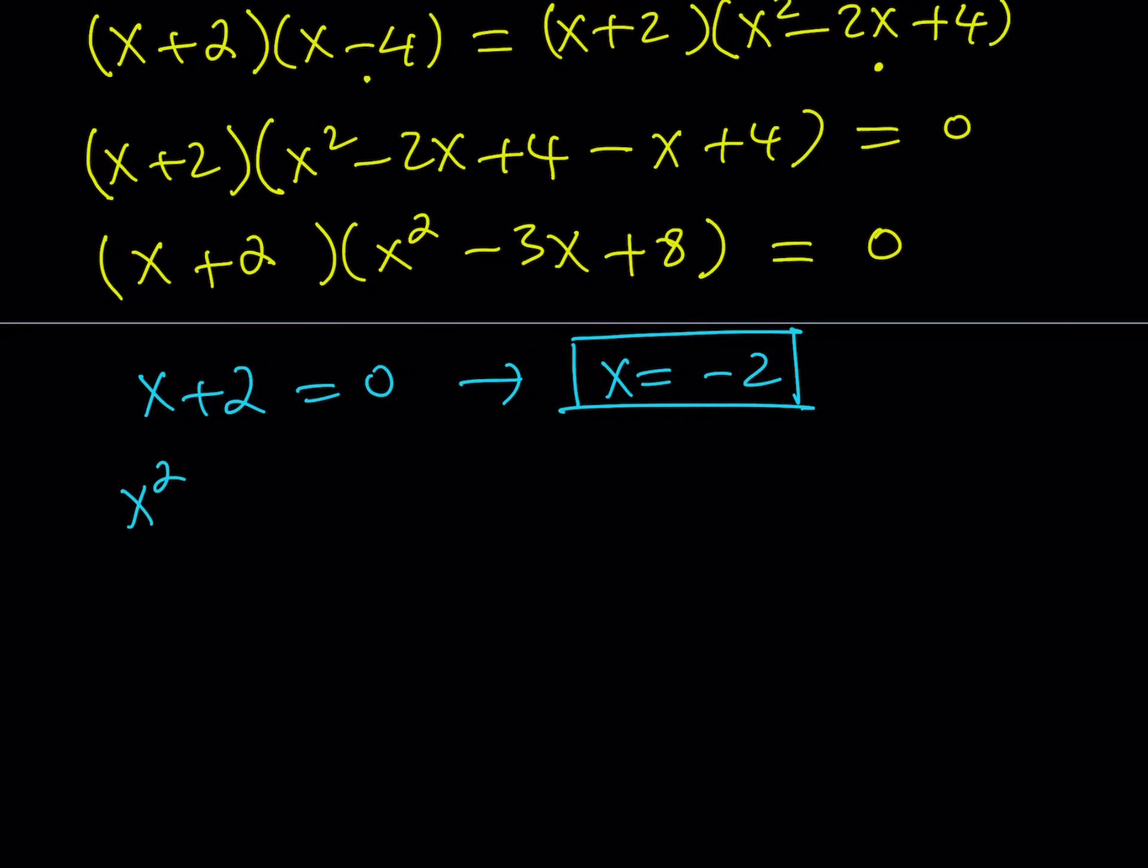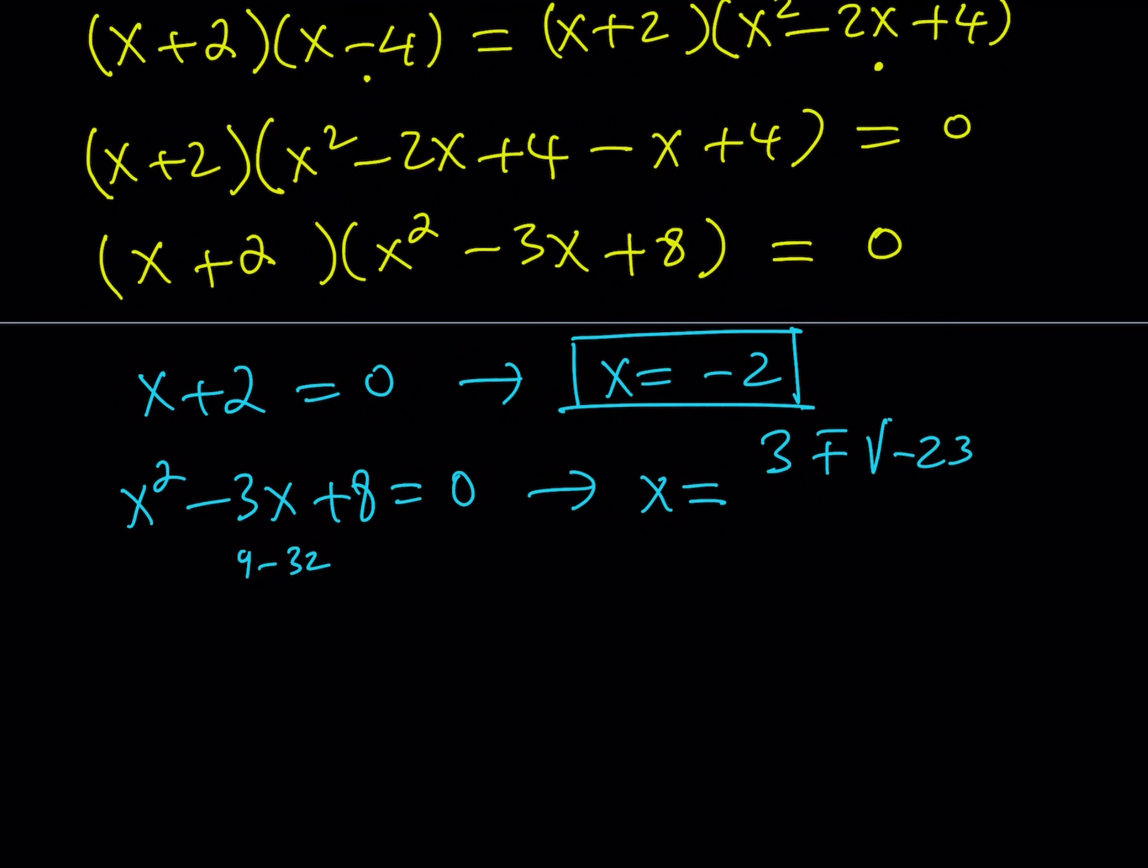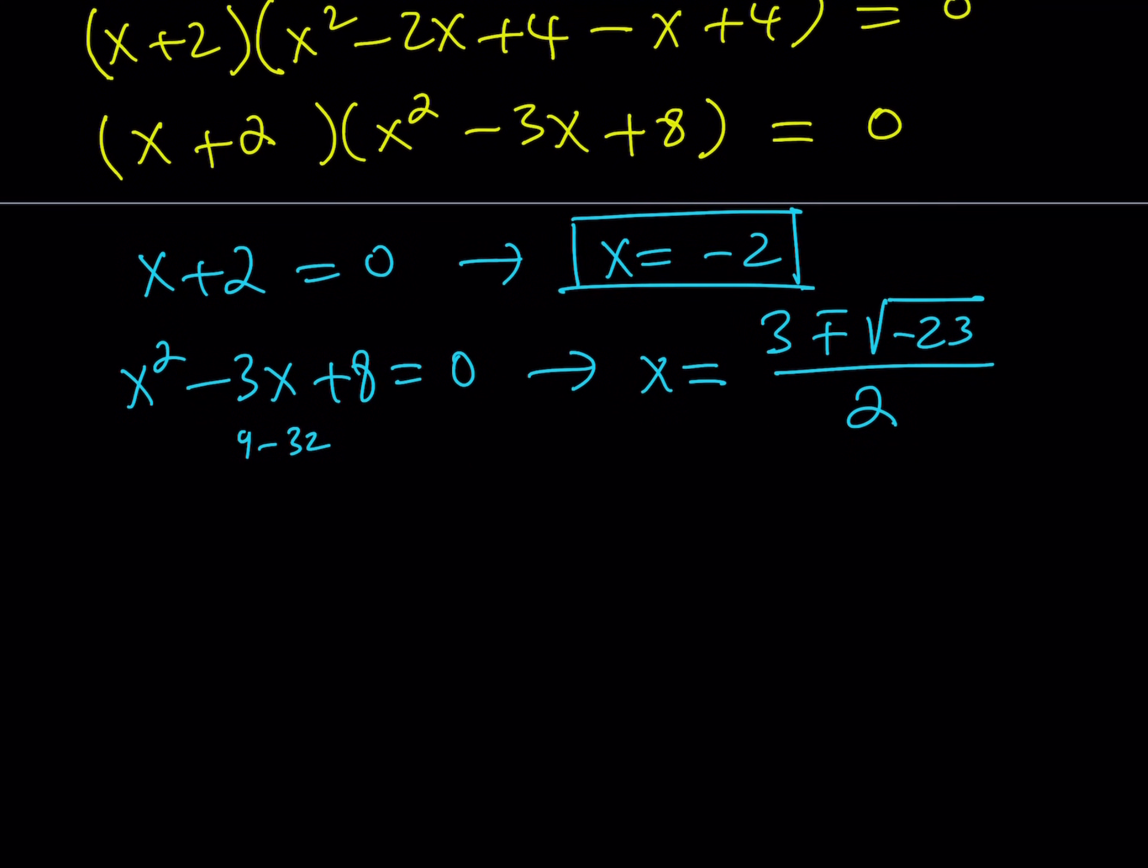The other one is quadratic, but no worries. There is a formula called the quadratic formula. Negative b plus minus the square root of b squared minus 4ac. The discriminant is going to be negative 23. We're getting complex solutions. So we got a real solution, and we're getting two complex solutions.